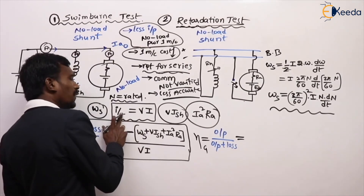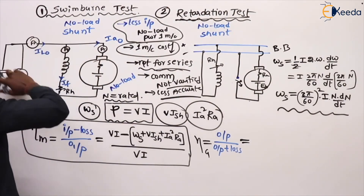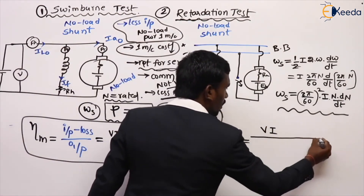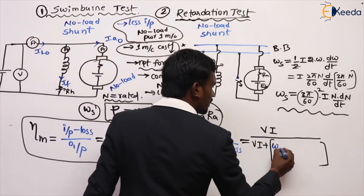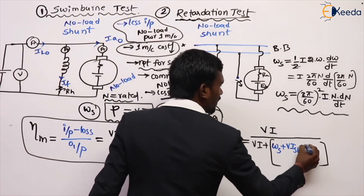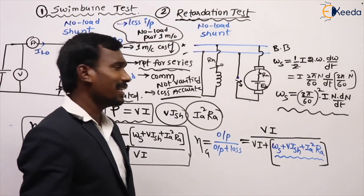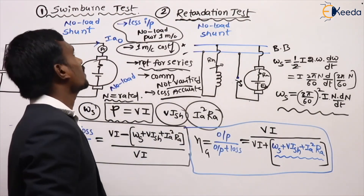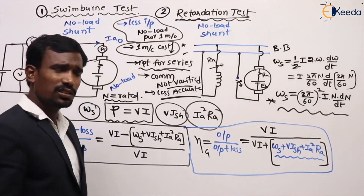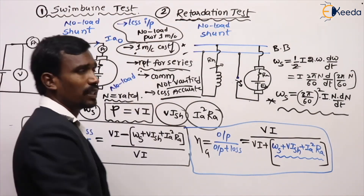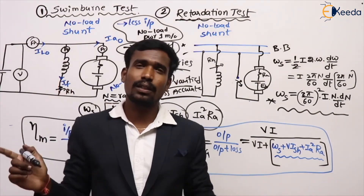For a generator, we know the output since that is the electrical quantity. So for generator, efficiency = Output / (Output + Losses) = V·I / (V·I + losses), where losses are stray losses plus shunt field losses plus armature losses. This is the efficiency of the generator calculated in the no-load test — both Swinburne's and retardation test. The advantages and disadvantages are important for competitive examinations. No-load tests are two: one is Swinburne's test and the next one is the retardation test. Thank you.